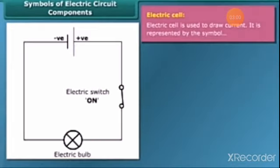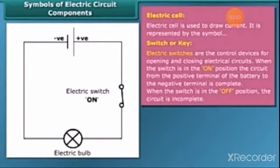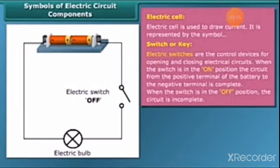Switch or key makes or breaks the connection of a circuit. When the circuit is in ON position, the circuit is closed and the current flows throughout the circuit. When the switch is in OFF position, the circuit is open. In this case, no current flows through the circuit.